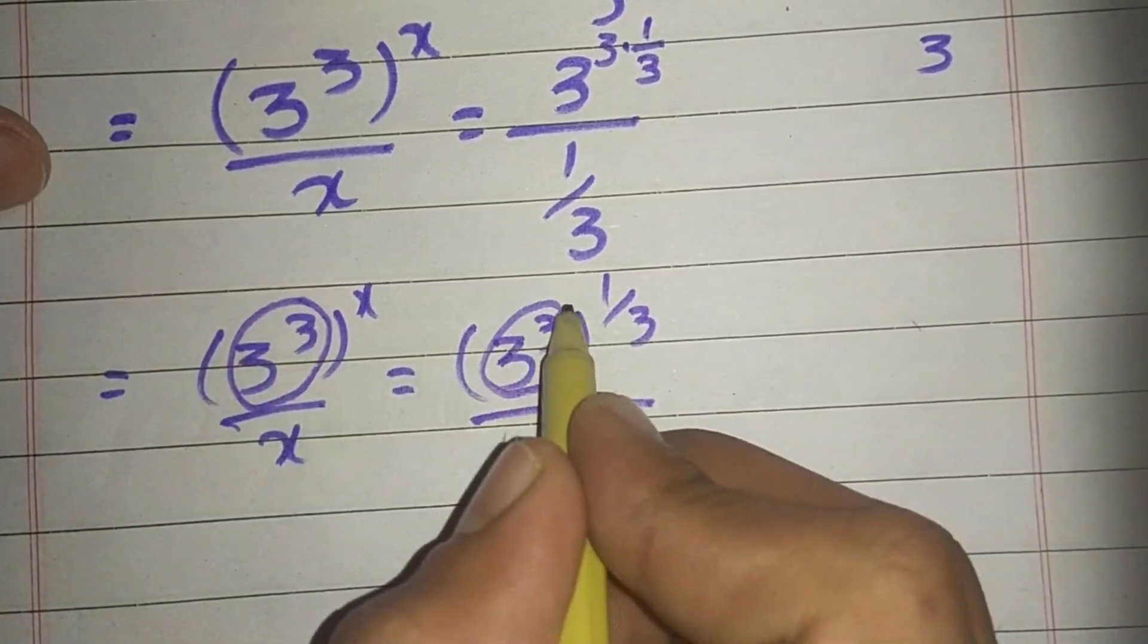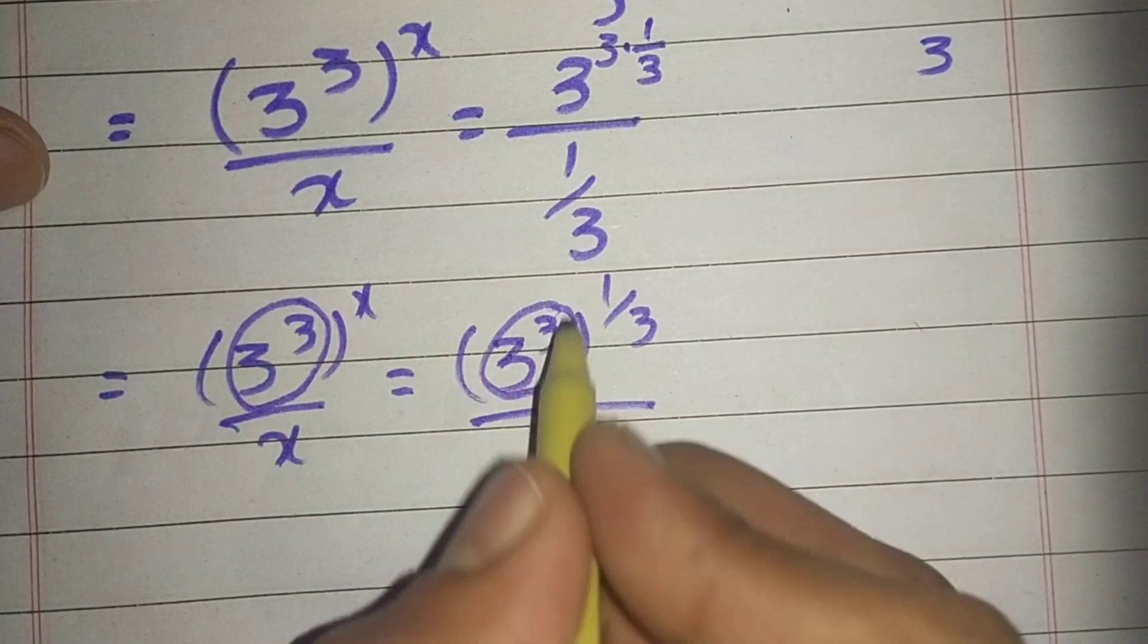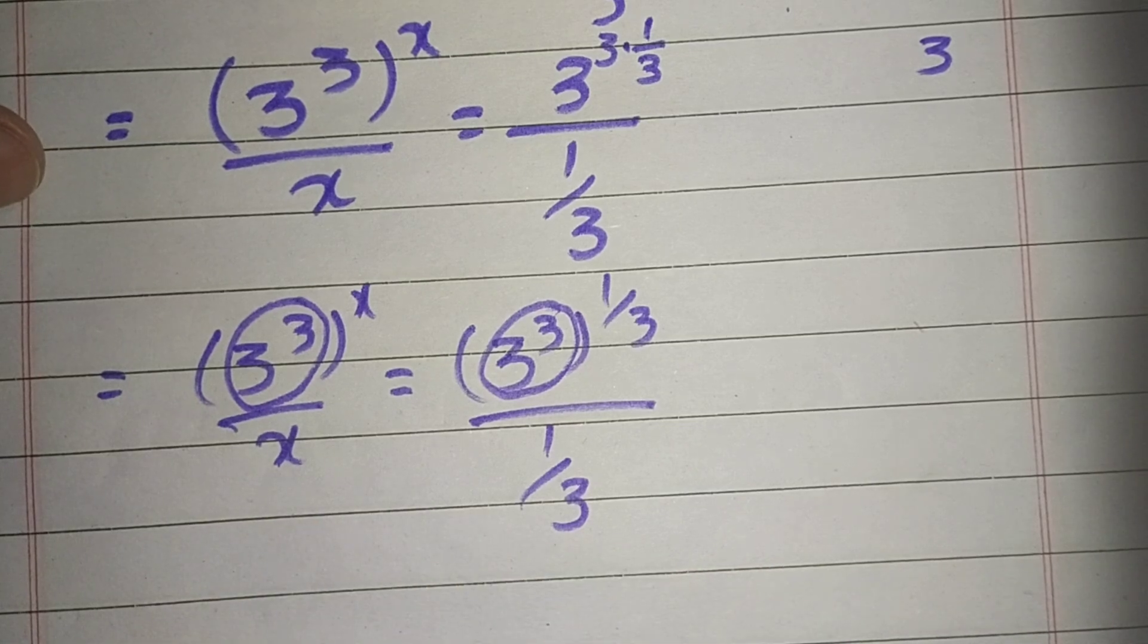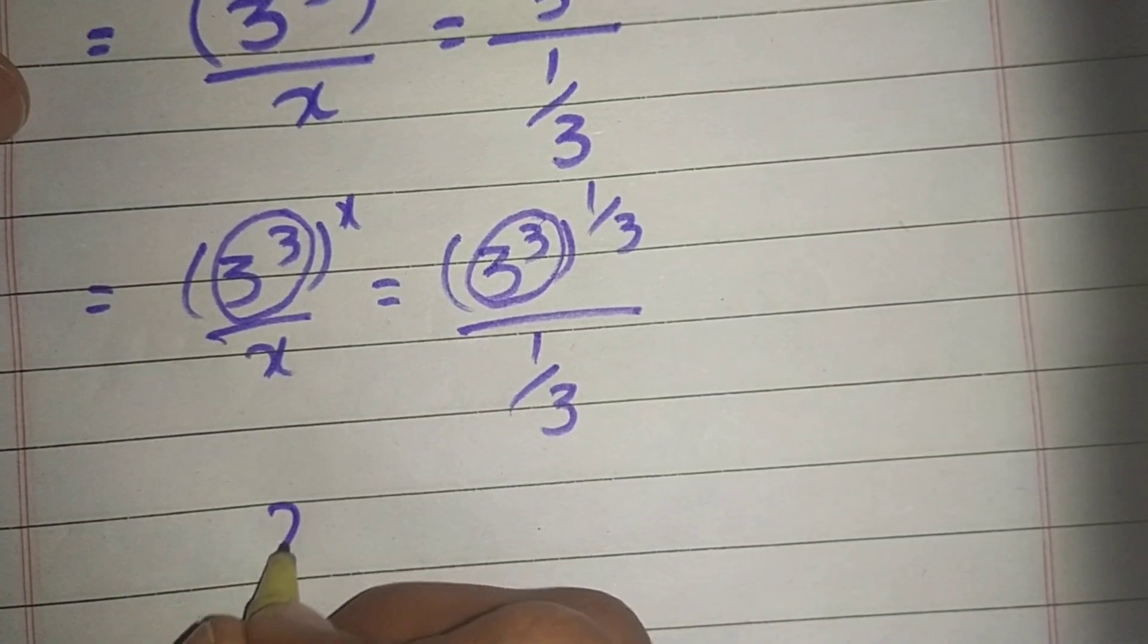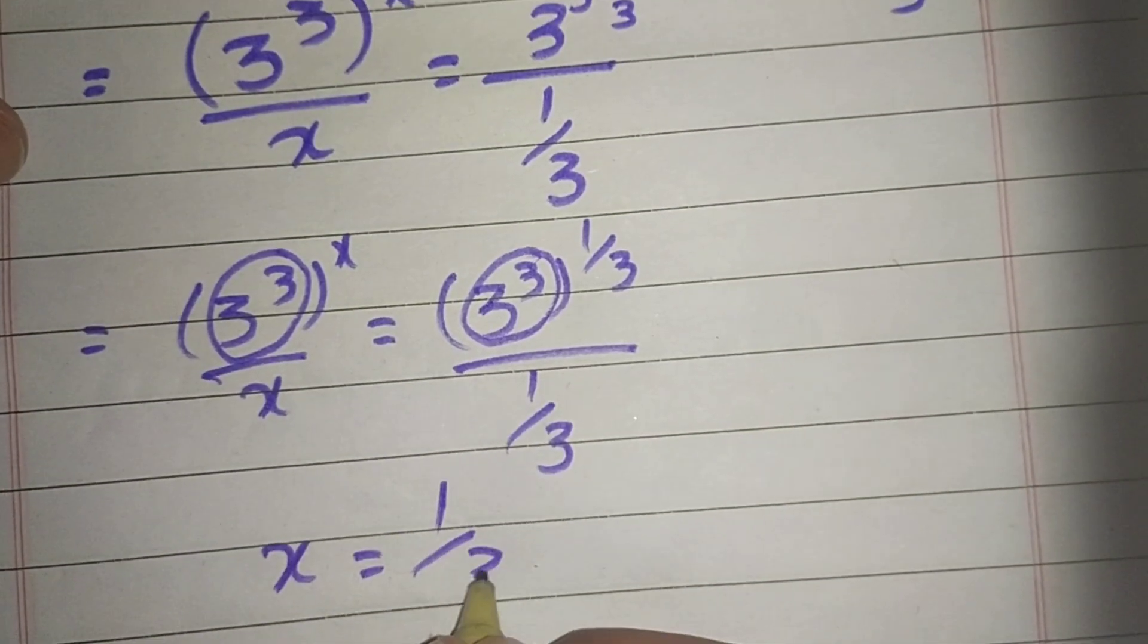Here 3 power 3 is equal to 3 power 3. So we can compare the powers and denominators. So we get x is equal to 1 divided by 3.